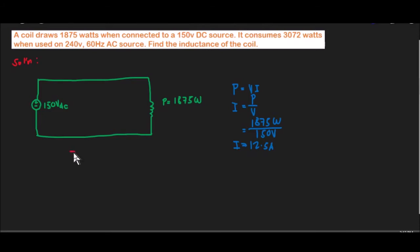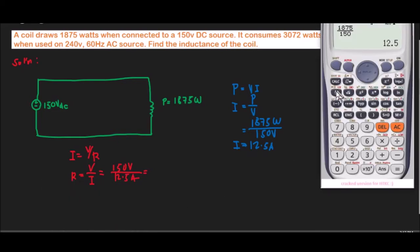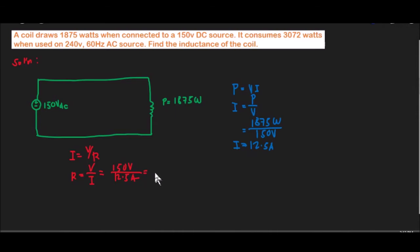Using Ohm's law, I equals V over R, so we can have R equals V over I. Substituting the given values: 150 volts DC divided by 12.5 amperes. Calculating: 150 over 12.5 equals 12. So the resistance of the coil is 12 ohms.